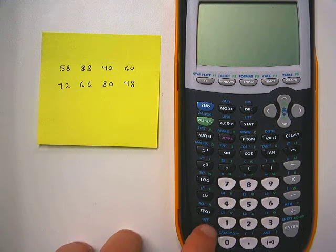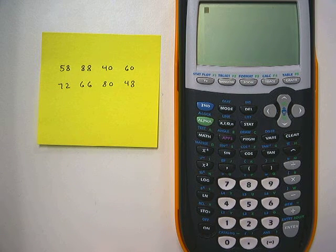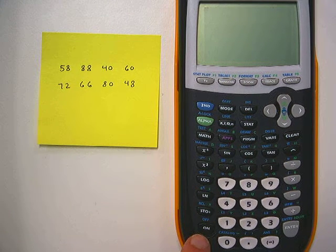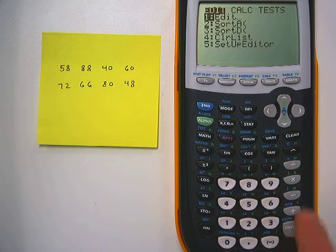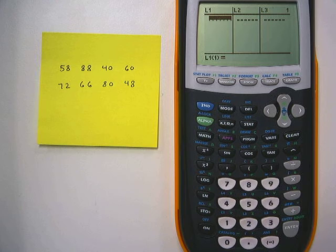Now in order to do it on the calculator, the first thing we need to do is turn the calculator on. That might be difficult for some of you, but it's this key right here. The next thing we're going to do is hit the stat key and then hit enter so that we're in our list screen.